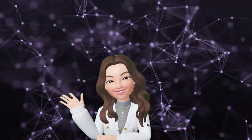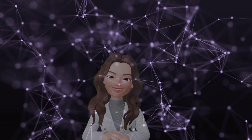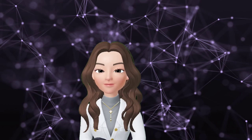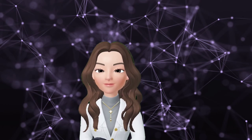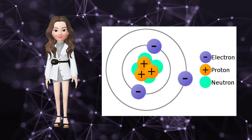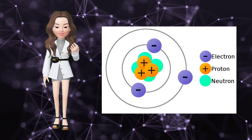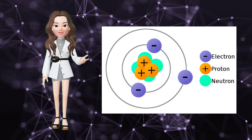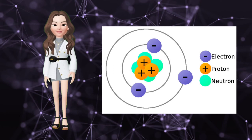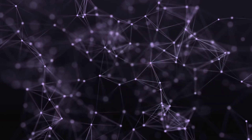Good day everyone! In our previous lesson, we talked about atoms and its subatomic particles. For the recap, the subatomic particles of atoms are protons with a positive charge, electrons with a negative charge, and neutrons with a neutral charge.